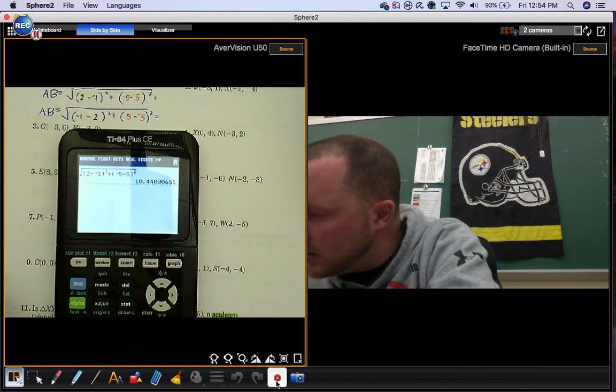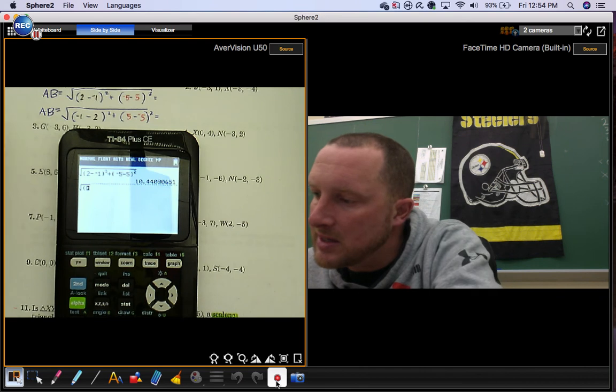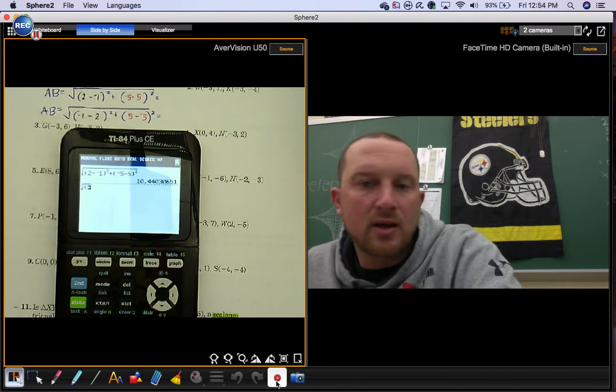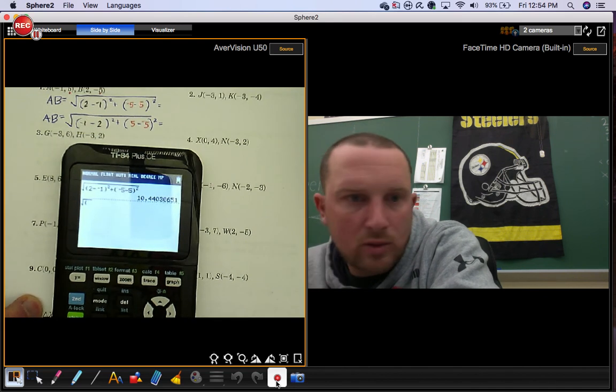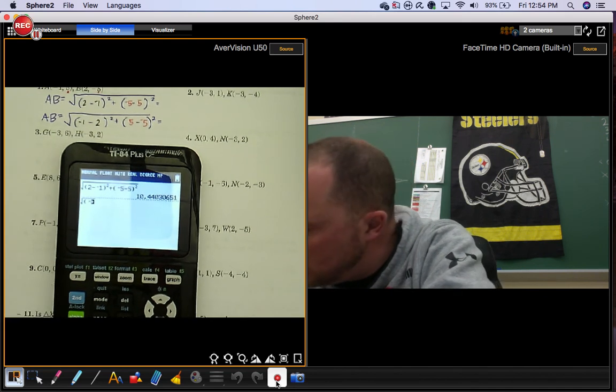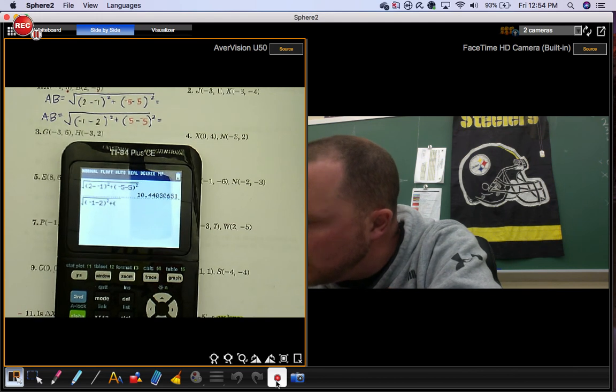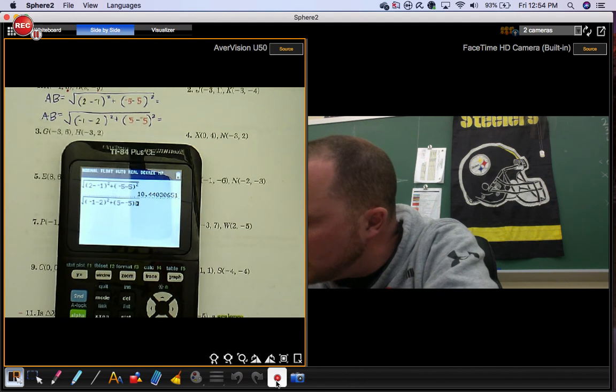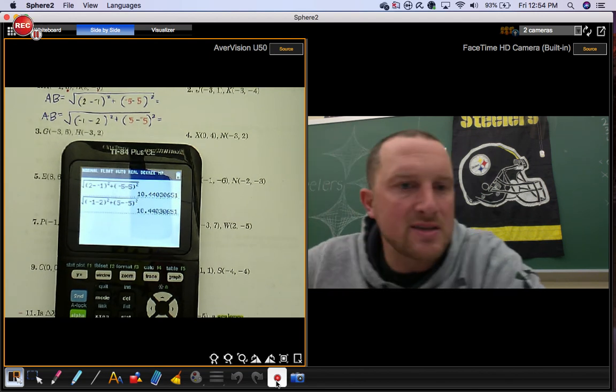Now we're going to do the same exact thing using the same exact ordered pairs, except we're going to switch them. Instead of going from b to a, how far is it from a to b? Now let's see, we're going to do negative 1 minus 2 squared plus 5 minus negative 5 squared. See how you get the same answer?